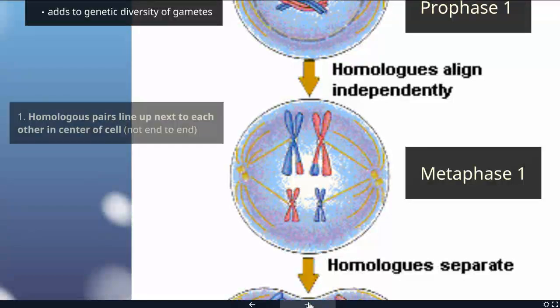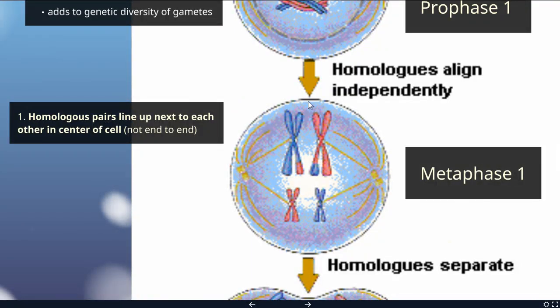Next we go to metaphase I. In this step, homologous pairs line up next to each other in the center of the cell. Unlike mitosis, in meiosis they're not lined up end to end — instead, your homologous pairs are still together. This is sometimes referred to as tetrads lining up, and you can see why, because it looks like we have four pieces. Notice the result of a crossing over event is depicted here as well.